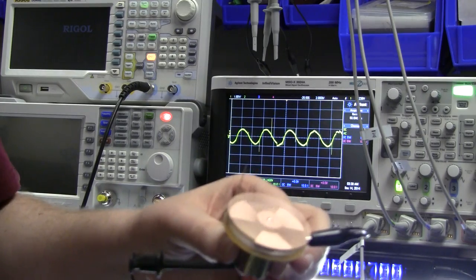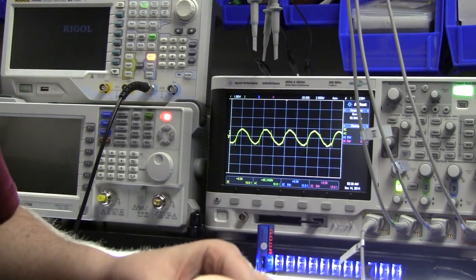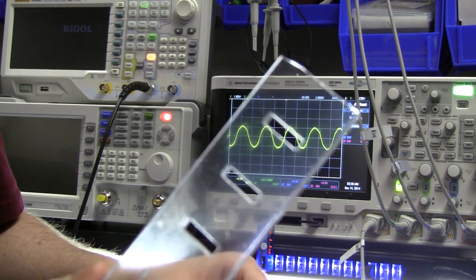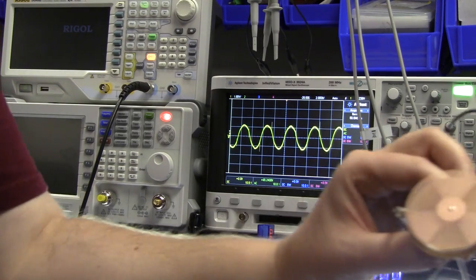But what I can do is I can charge up a piece of acrylic. This is just an acrylic off-cut. I'm going to charge it up by rubbing it through my hair. Now when I approach the field mill with it, let's try and do this in a way that you can actually see both at the same time.